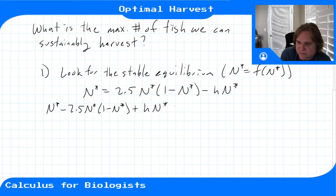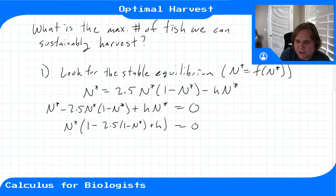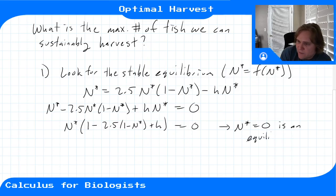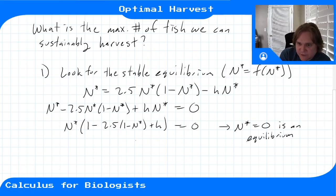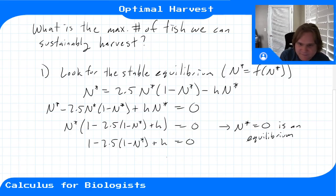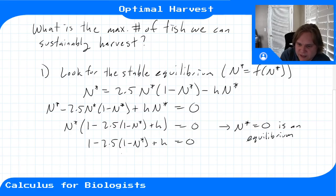We get: n* − 2.5 · n* · (1 − n*) + h · n* = 0. Factoring out n*, we have: n* · [1 − 2.5(1 − n*) + h] = 0. This immediately gives us one equilibrium point at n* = 0, which makes sense — if we have no fish, the next year we should also have no fish. Then we solve 1 − 2.5(1 − n*) + h = 0 for the second equilibrium point.